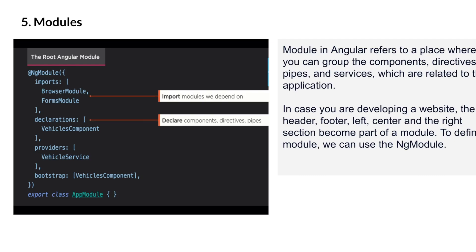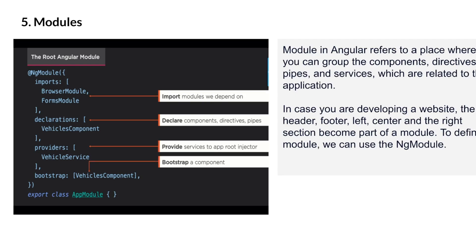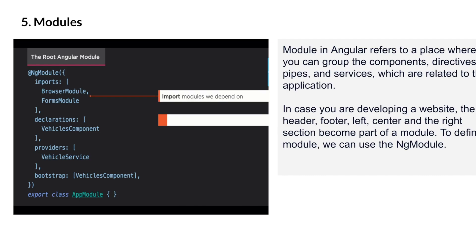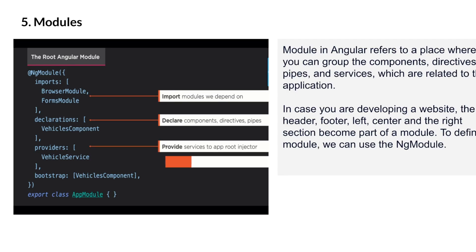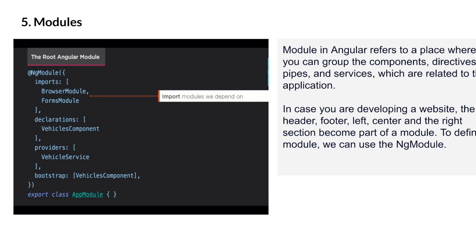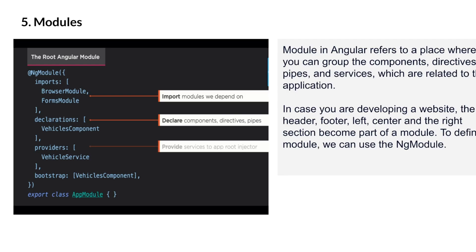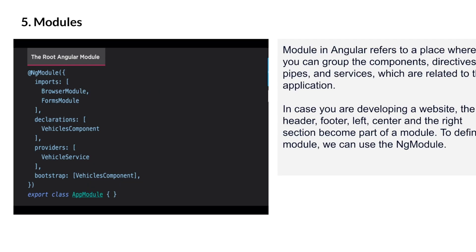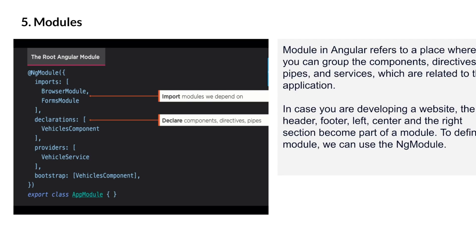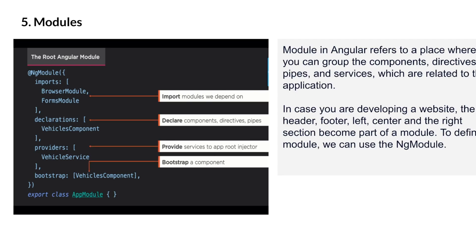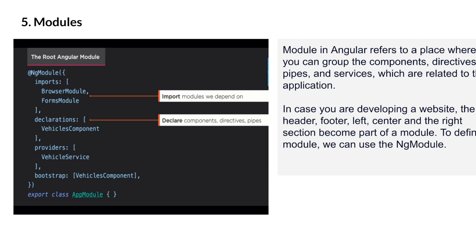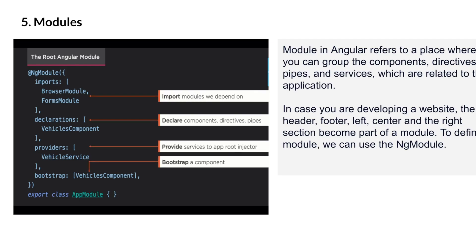The fifth building block is modules. Modules in Angular refer to the place where you can group components, directives, pipes, and services related to the application. Unlike React, Angular requires you to declare everything in a structured way — grouping all components, directives, pipes, and services in a single root file.